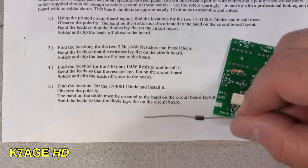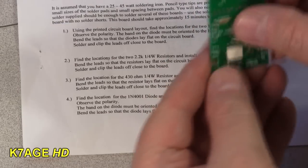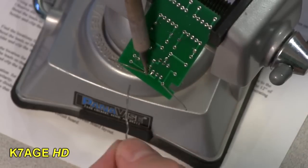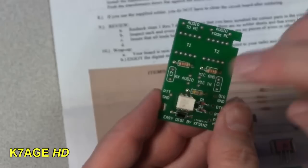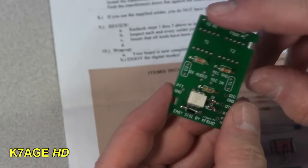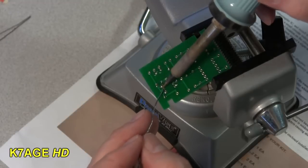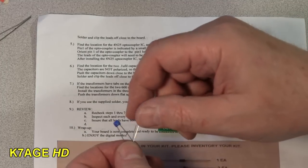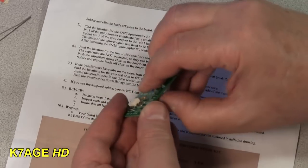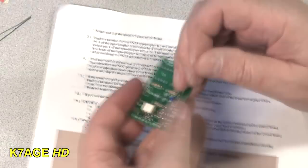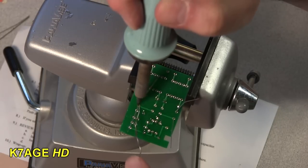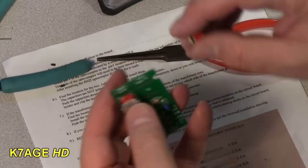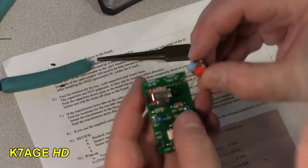Next step is to mount this 430 ohm resistor, then a 1N4001 diode, the optocoupler that's already placed on the board, and C1 and C2, a couple little capacitors.